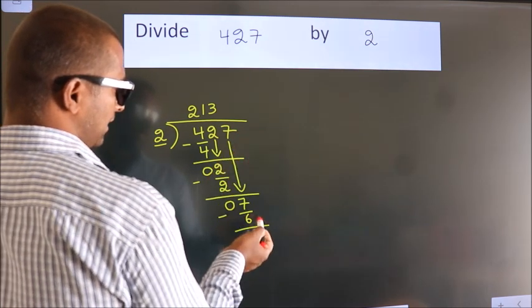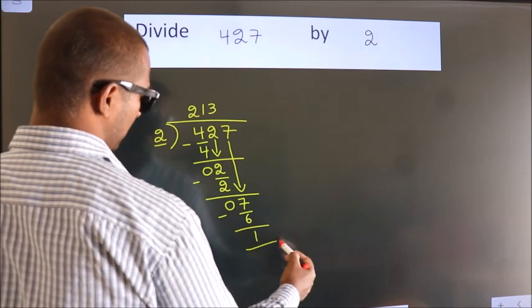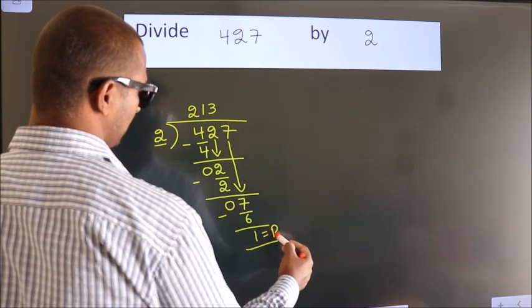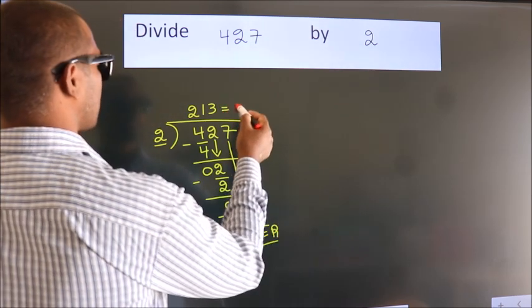No more numbers to bring it down. So, we stop here. This is our remainder. This is our quotient.